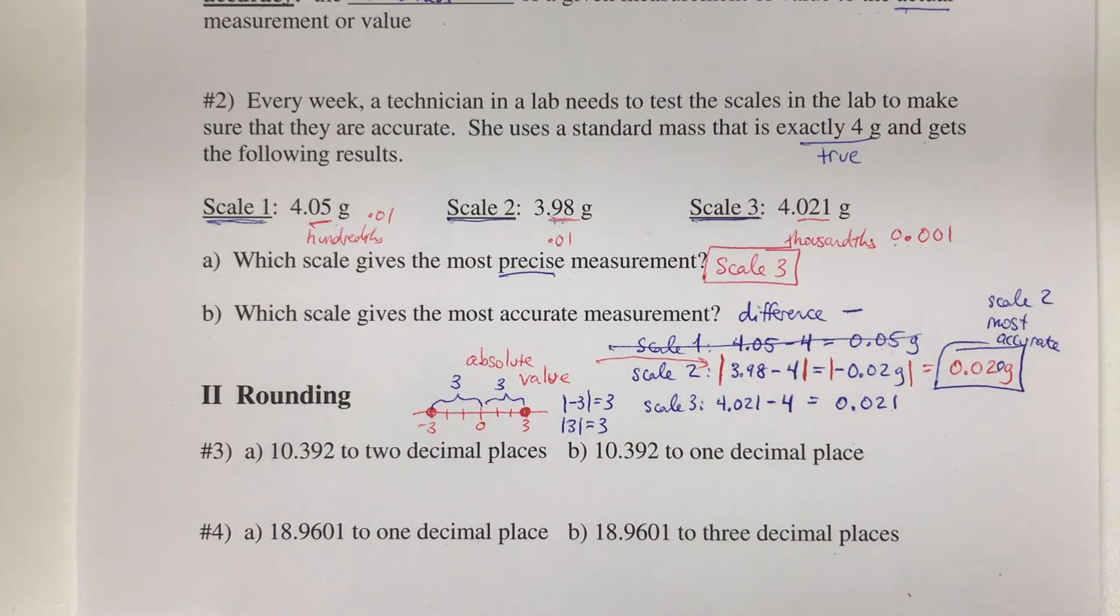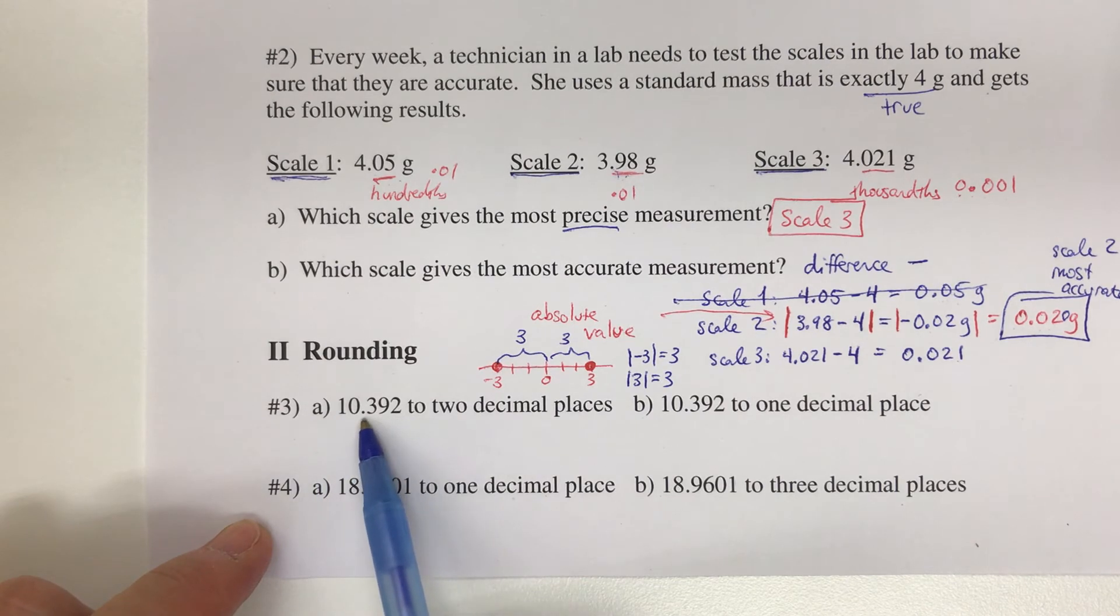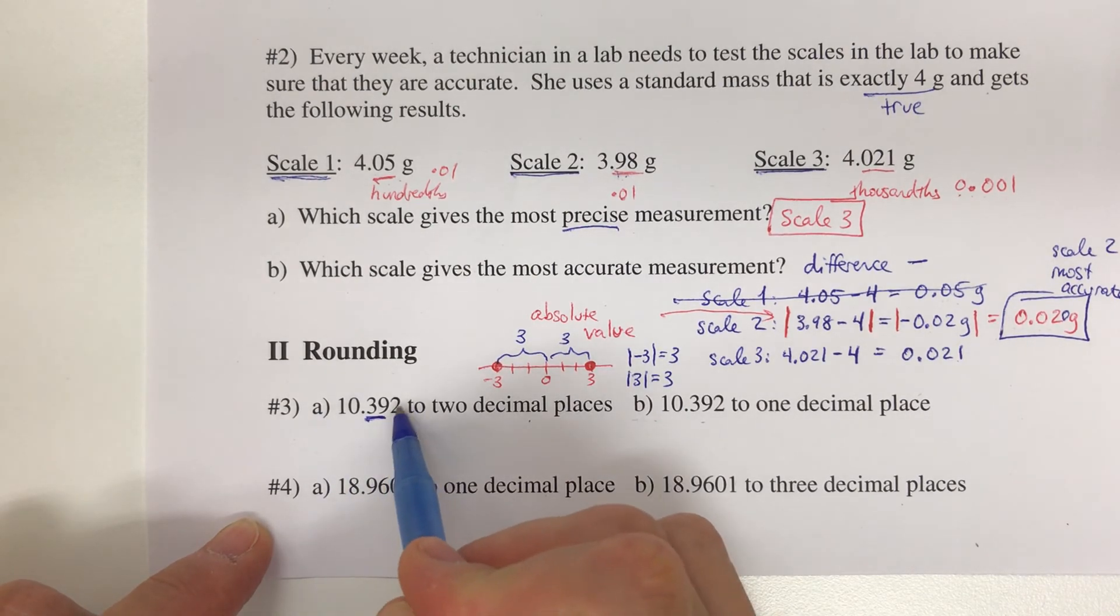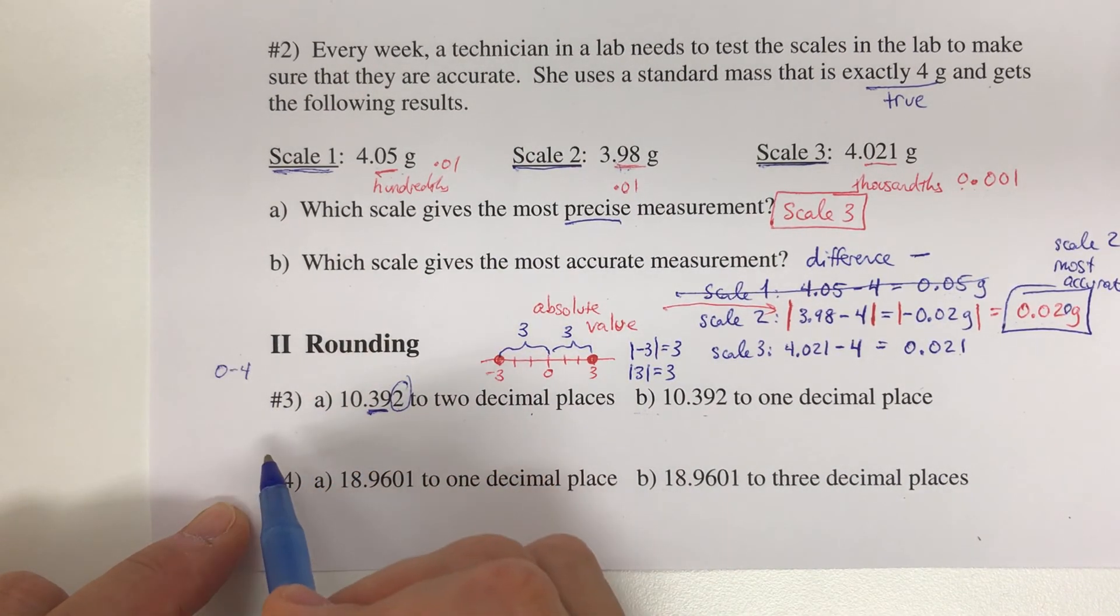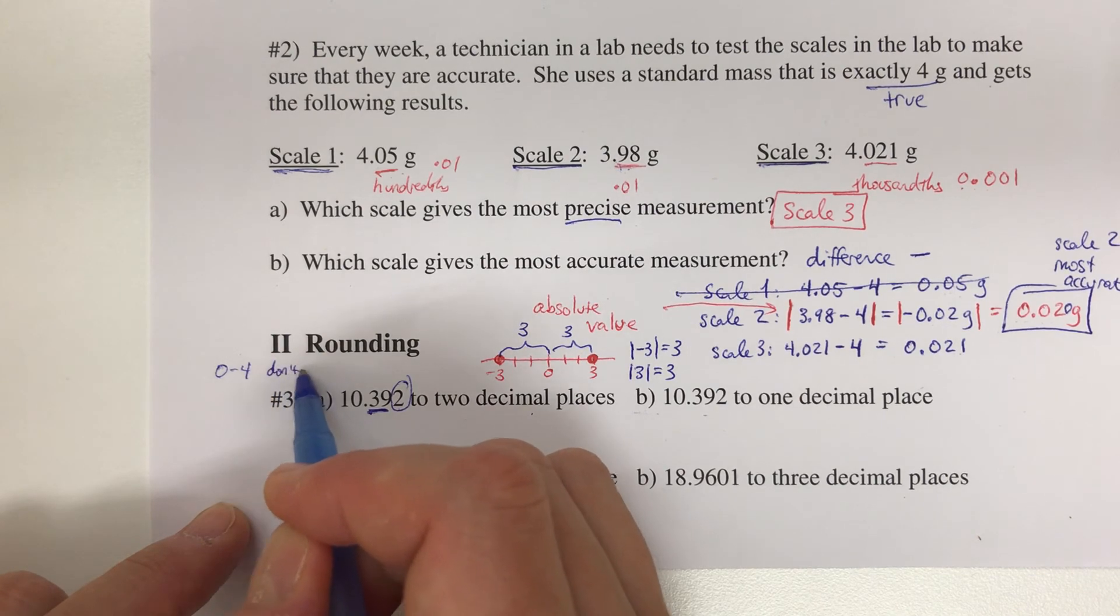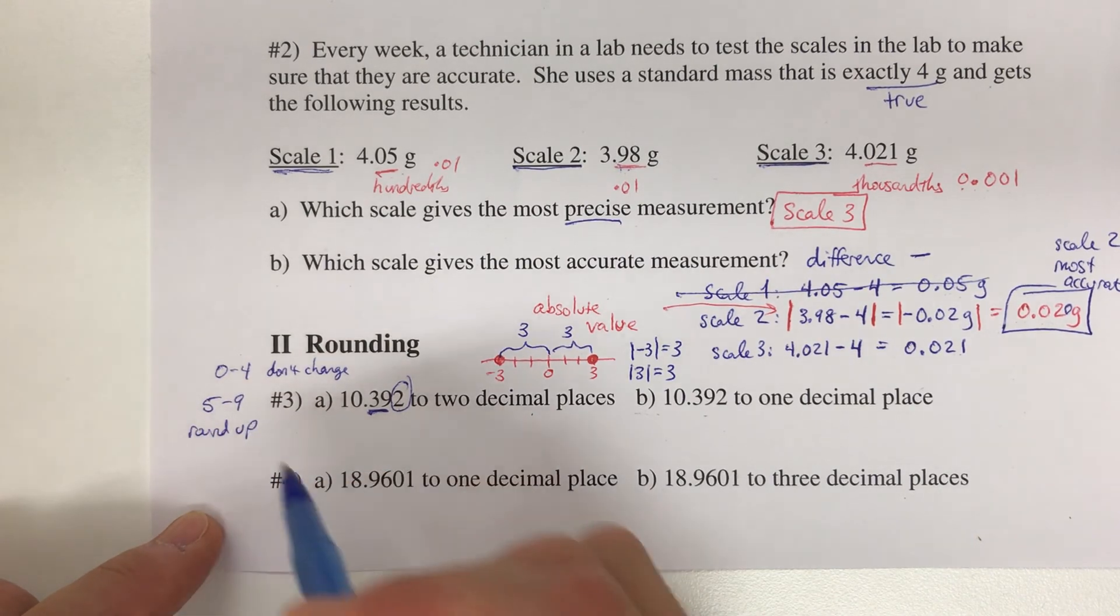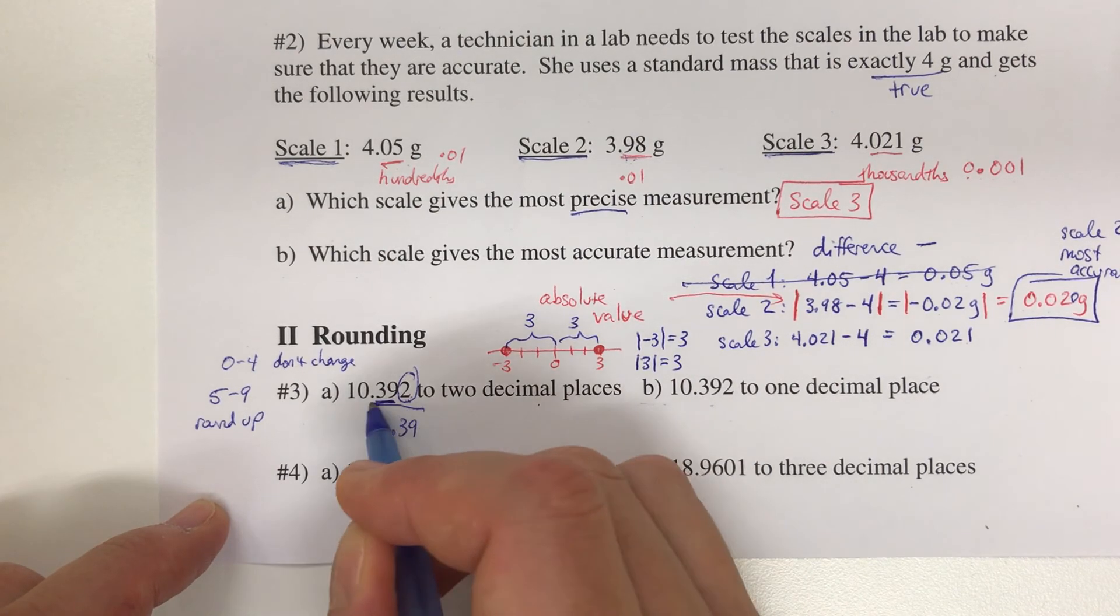Now the last thing is rounding. In number three, we take 10.392 and round it to two decimal places. We're looking at 10.39. We go to the next digit, which is a 2. If the number is 0 to 4, we don't change anything. If it's 5 to 9, we have to round up. Since the next digit after that 9 is a 2, we're not going to change this, so the answer is 10.39.